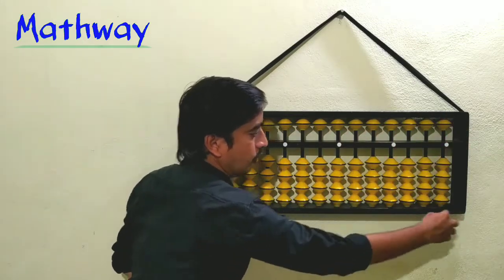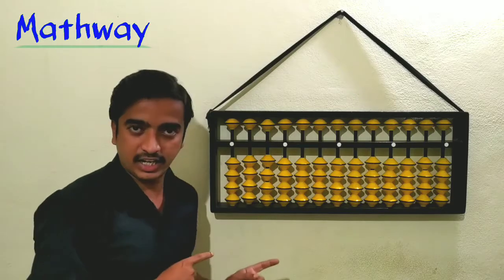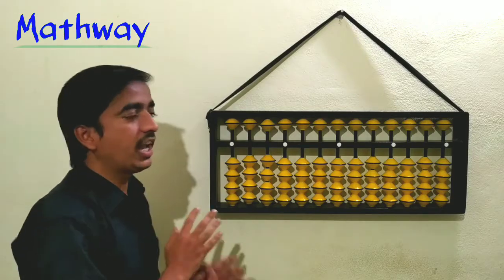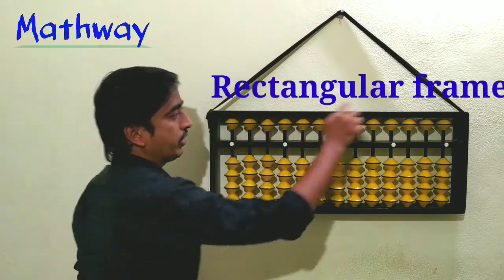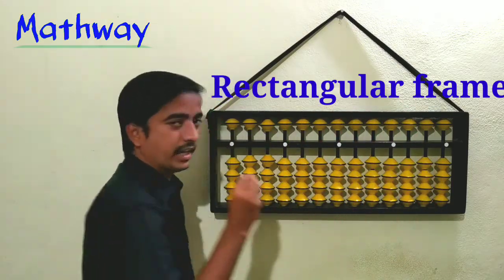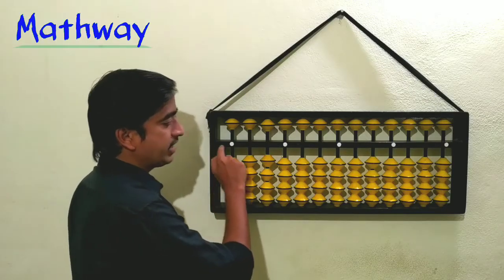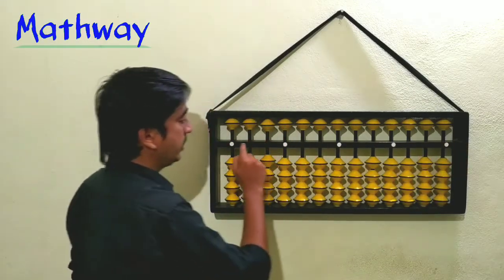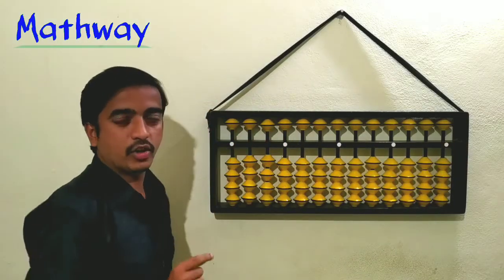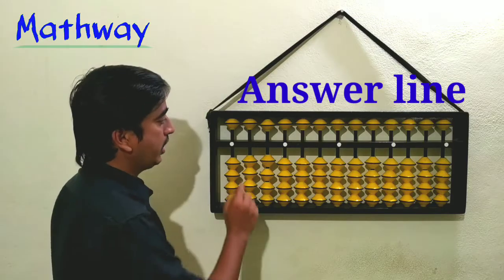This outer part is a frame — it is a rectangular shape, so it is a rectangular frame. Here you can see one horizontal rod, and this horizontal rod is called the answer line.